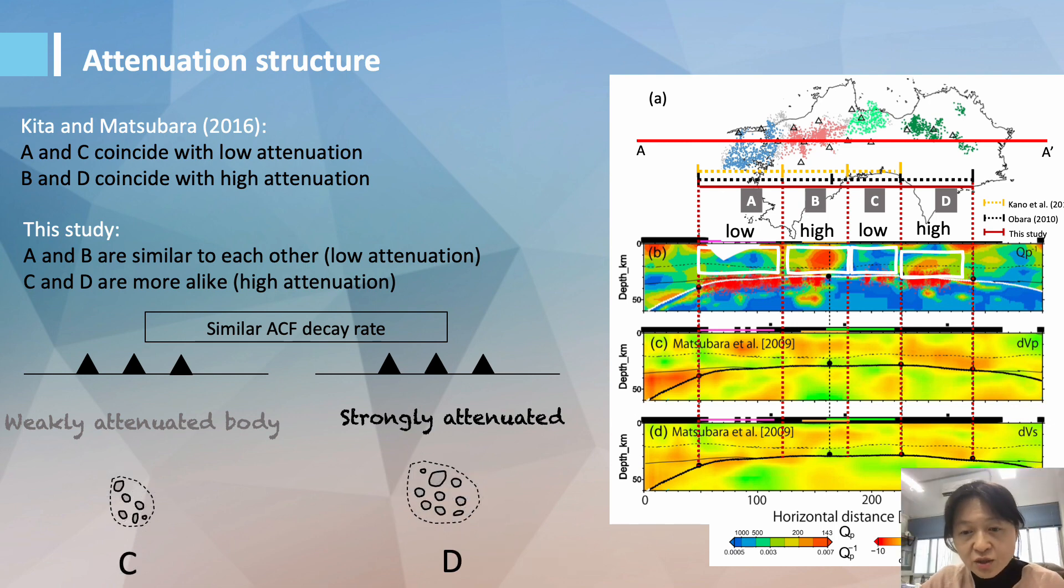And similarly, to have similar autocorrelation function decay rate, the size of tremor zone in D should be bigger than area C.